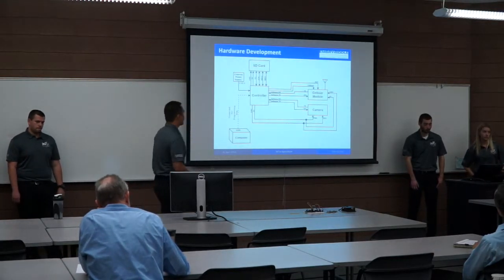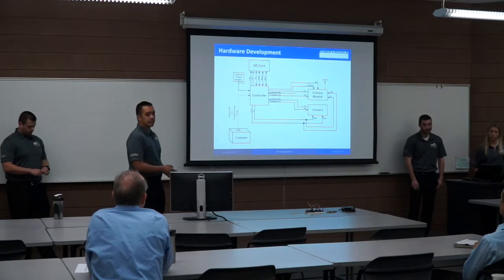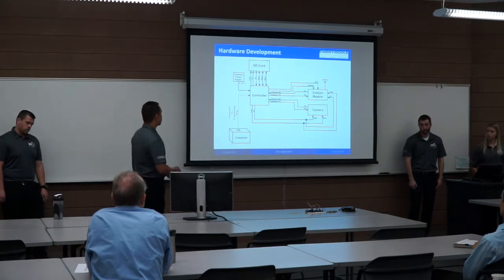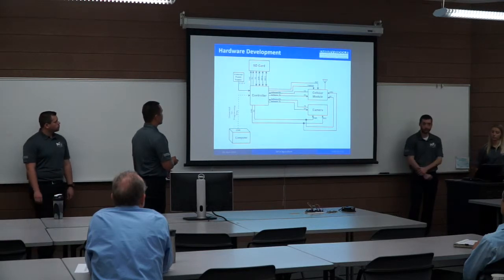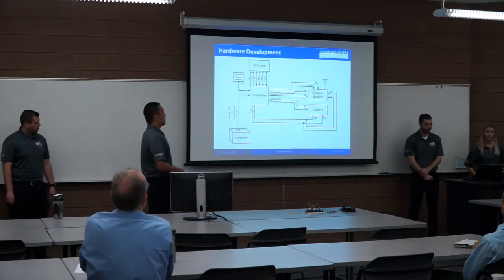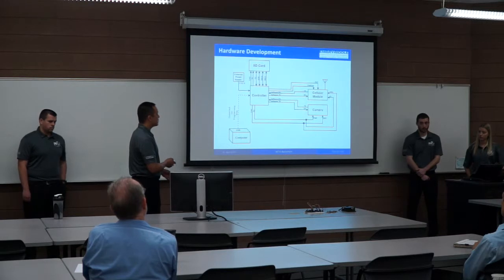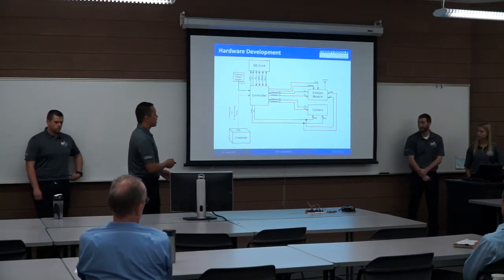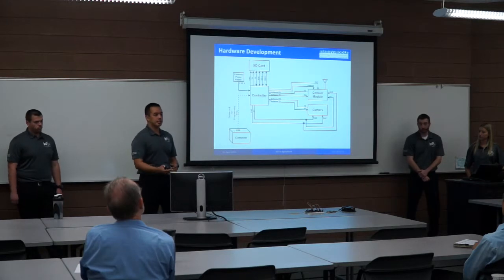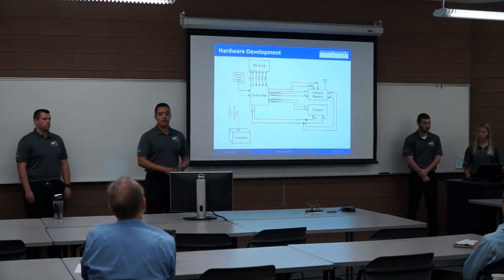Here's our hardware development diagram. Our controller is powered by an external DC power supply and connected to the computer via USB for programming. From the controller it connects to the SD card through a 5-volt pin-out, which also powers the camera and cell module. The SPI connections go to the SD card, and software serial transmit and receive go to the cell module and the camera to take images and send commands back and forth. We also have the reset and power-on pins to control the cell module to turn it on and initiate that serial connection.